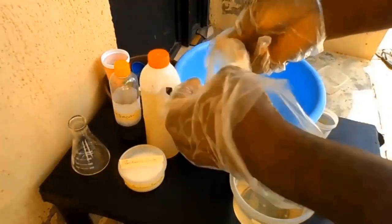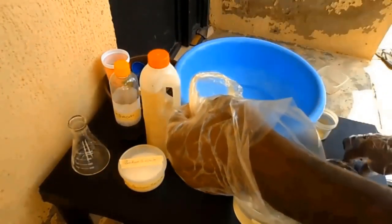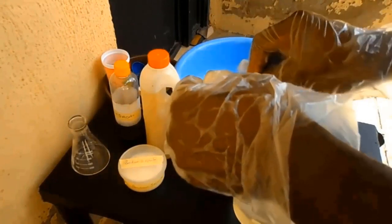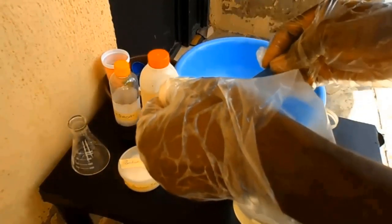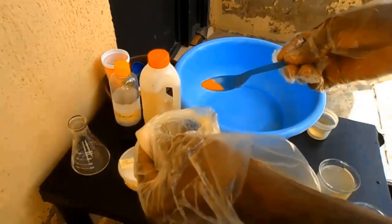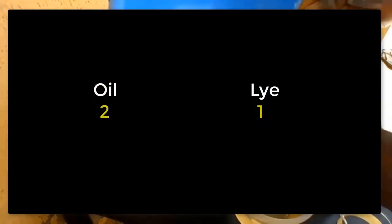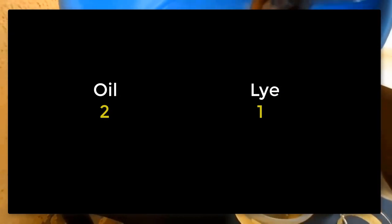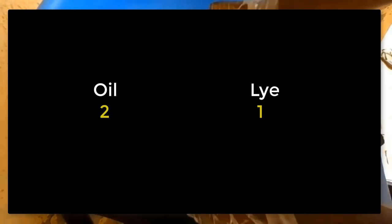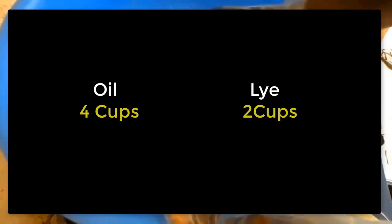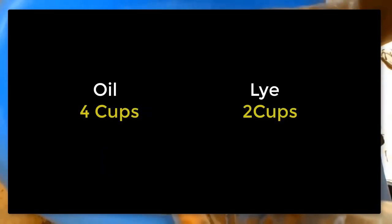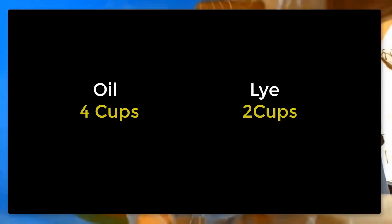This is very, very important. When making bar soap, whatever quantity of lye you want to use, make sure you use two times the quantity of oil. The quantity of oil will always be two times the quantity of lye. For example, if you're using four cups of oil, then you must use two cups of lye.